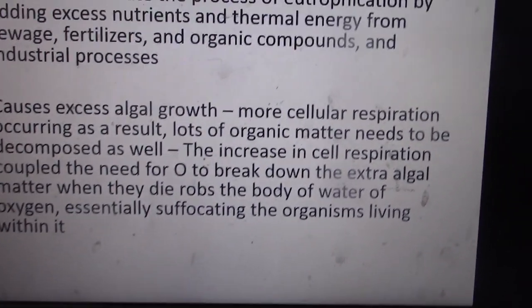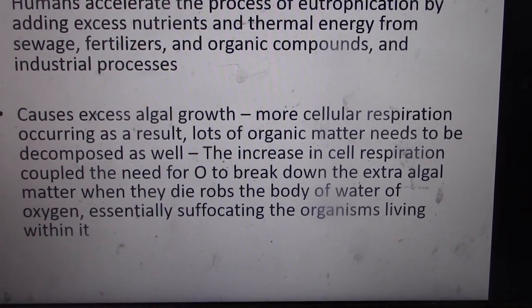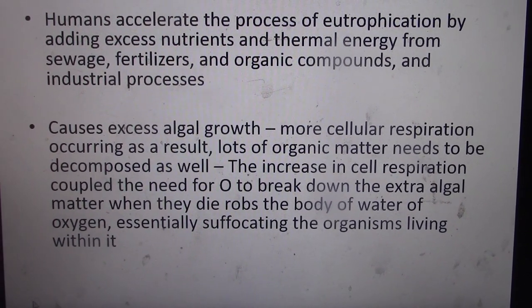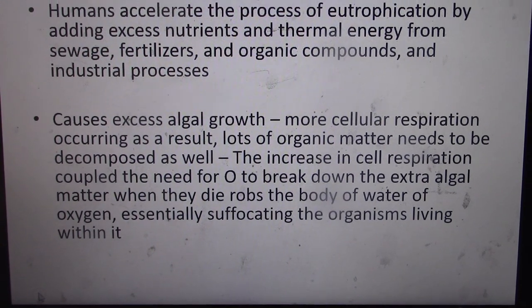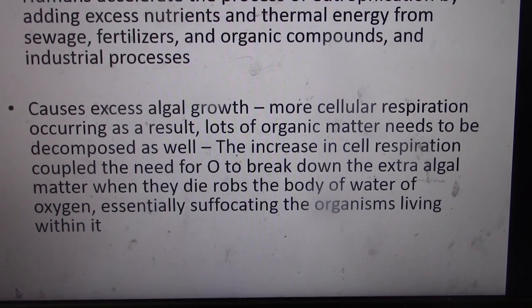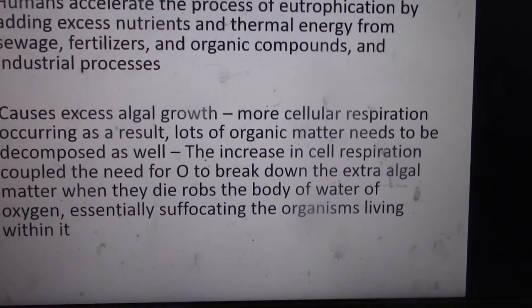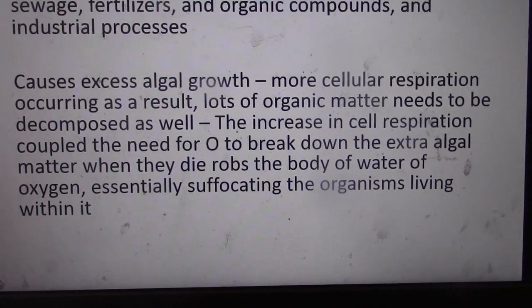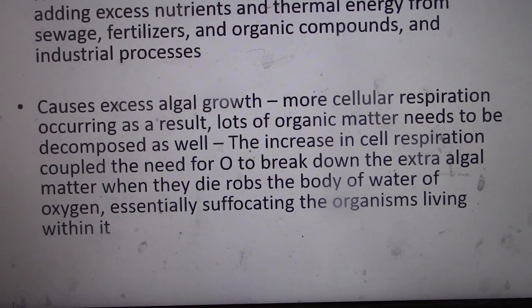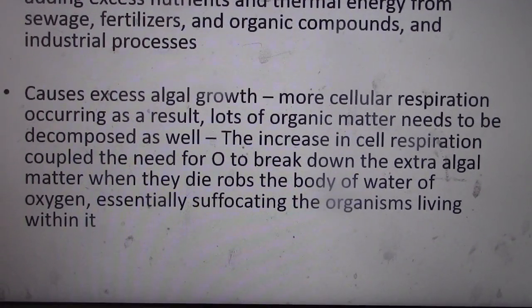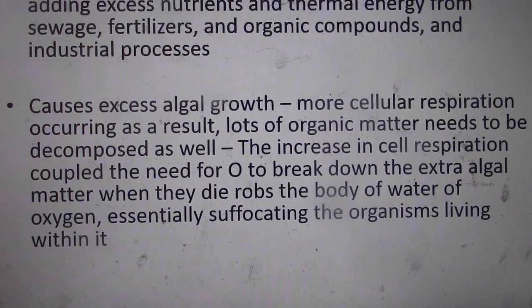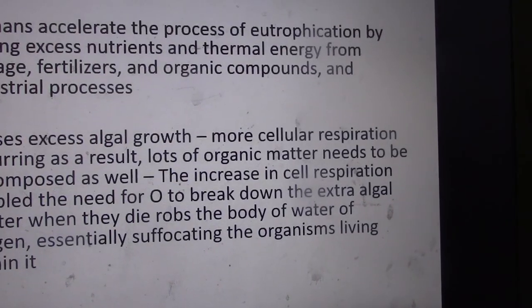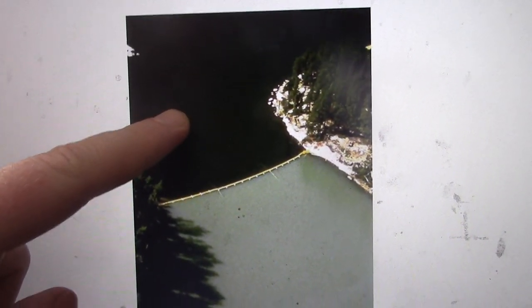Initially algae blooms seem good, but when algae die they need to be decomposed. Decomposers use cellular respiration to break down that dead algae, and in doing so they use up all the oxygen in the ecosystem. A eutrophied ecosystem is at risk of becoming oxygen depleted. Even though initial food resources are great, oxygen starts to choke off the ability for fish and other organisms to undergo cellular respiration and they essentially suffocate. This lake in the Experimental Lakes Area of northern Ontario shows an algae bloom in a eutrophied system versus what it should normally look like.